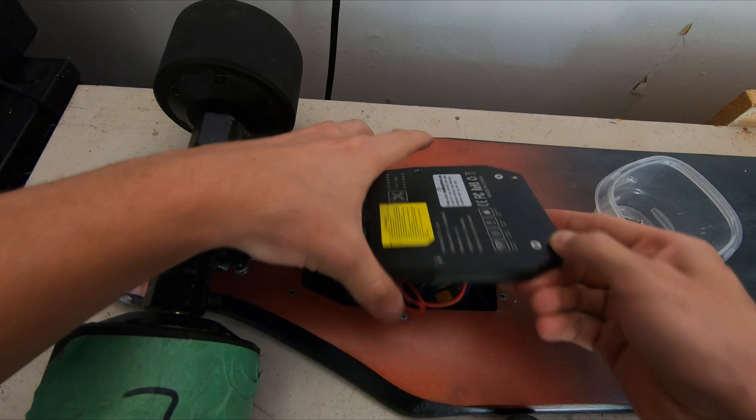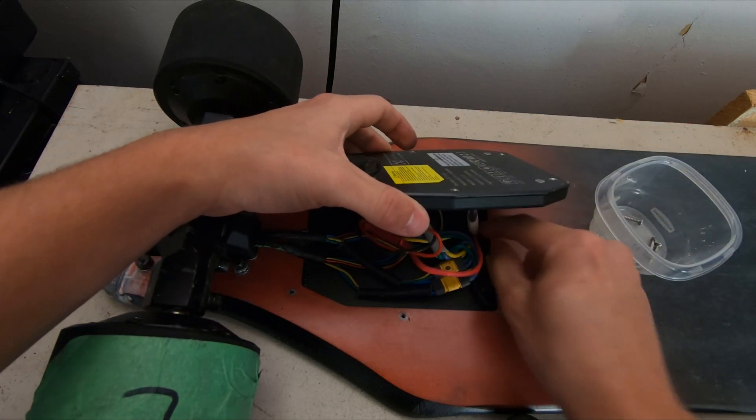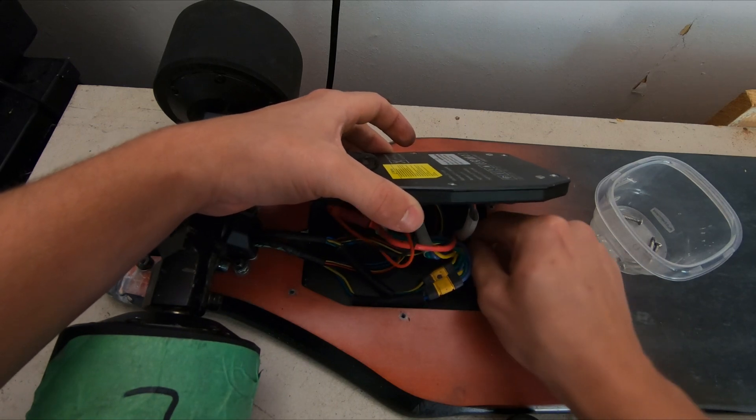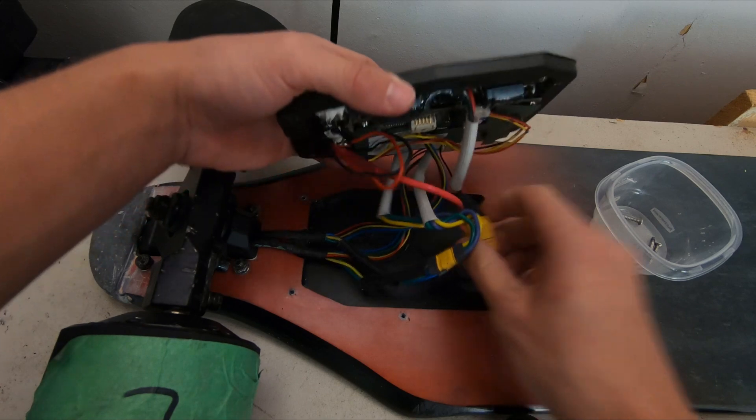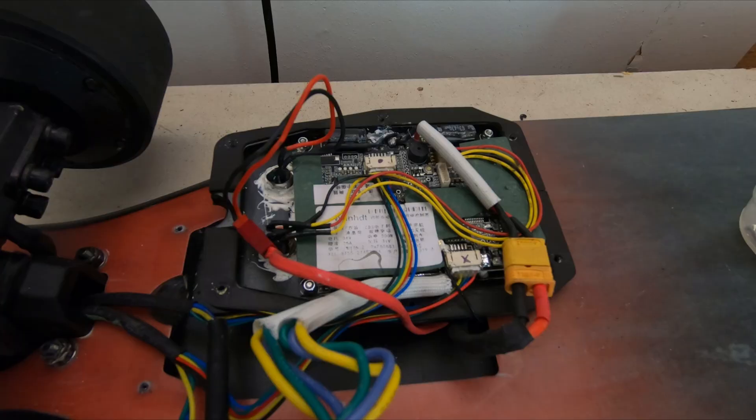Okay, so now that we have the screws off, the board should pop out pretty easily. If this is the first time that you've ever done this, the power wire over here is probably kind of tucked under the board a little bit. And once you kind of just pull that out, generally, the whole thing opens up pretty nicely.